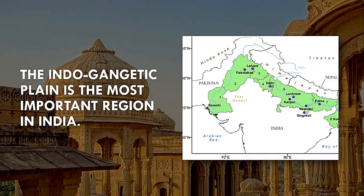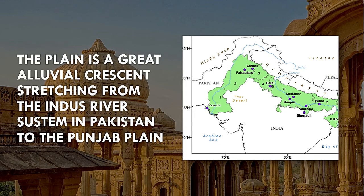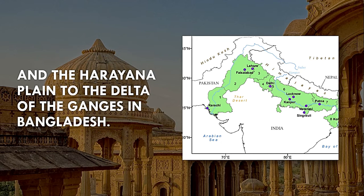The Indo-Gangetic Plain is the most important region of India. The Plain is a great alluvial crescent, stretching from the Indus River system in Pakistan to the Punjab Plain and the Haryana Plain to the delta of the Ganges in Bangladesh.